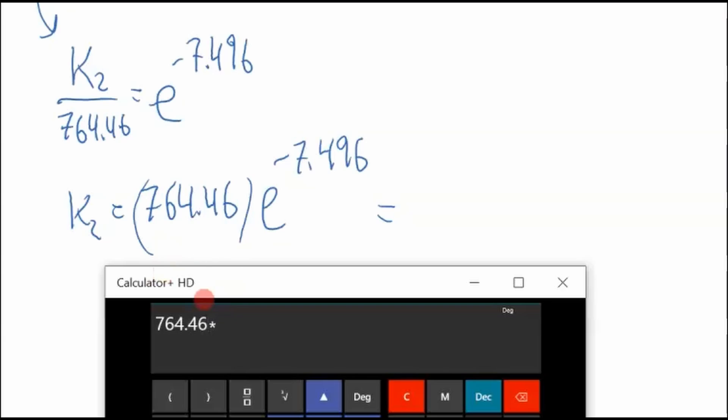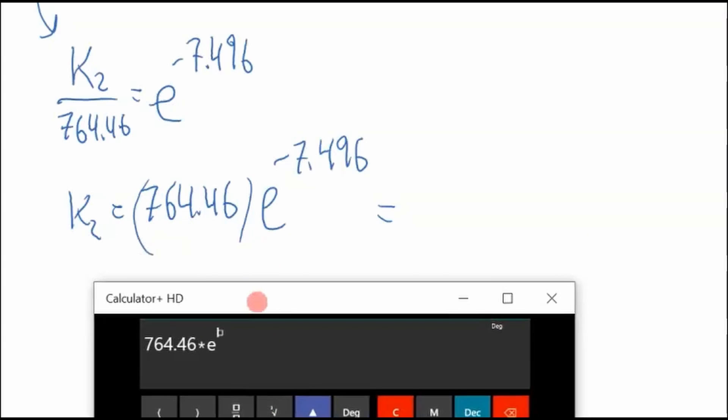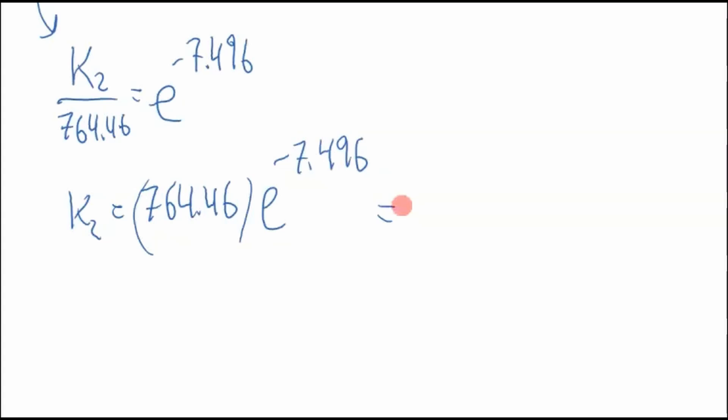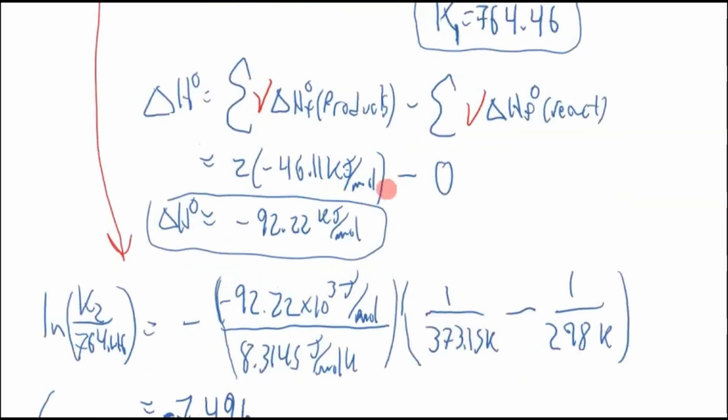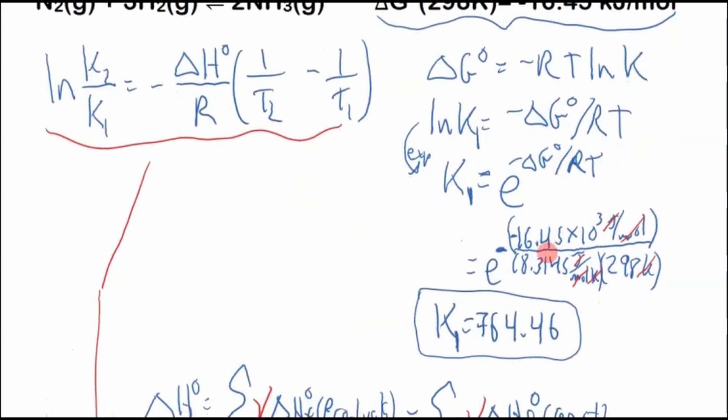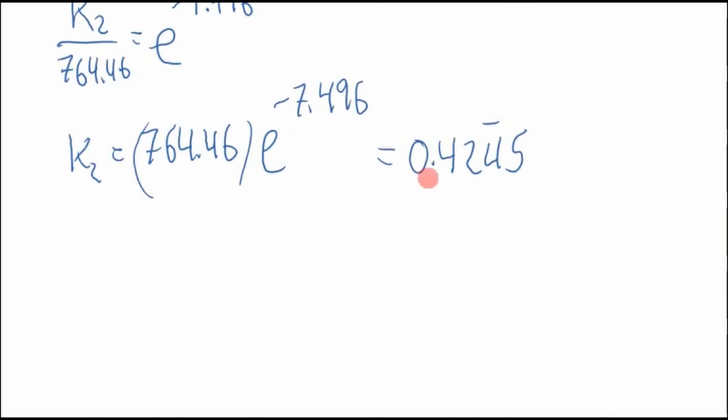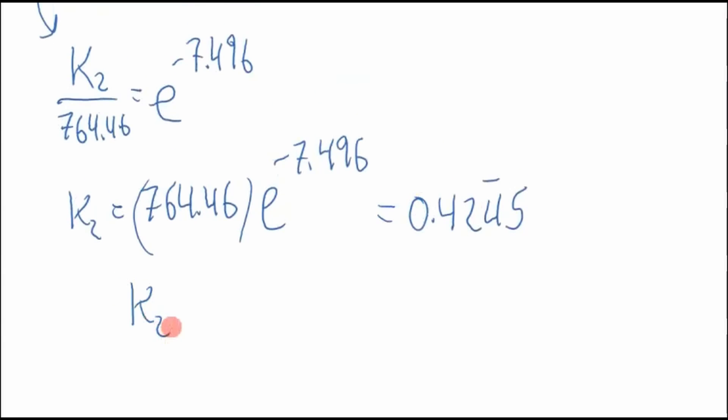764.46 times e, where's the e? e to the power of negative 7.496. And that looks good. Equals, okay, so 0.4245. And we'll round this to, how many sig figs is this? Four. Oh, but we've got to look at the same number of decimal places. We'll do three sig figs. So 0.424. So K2 equals 0.424.